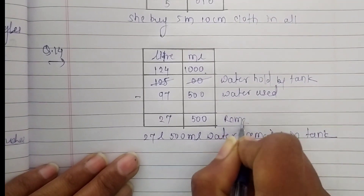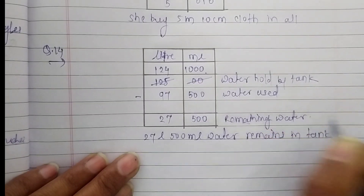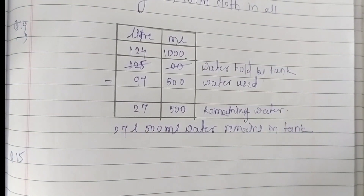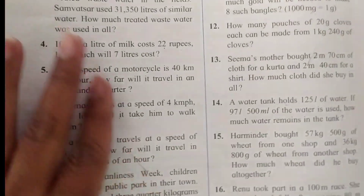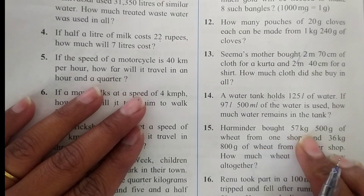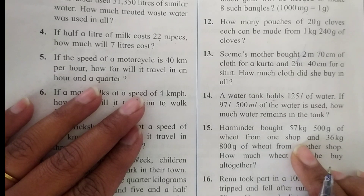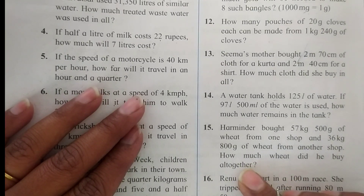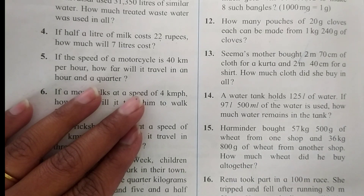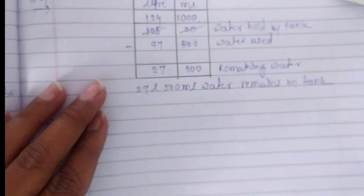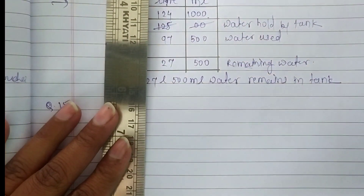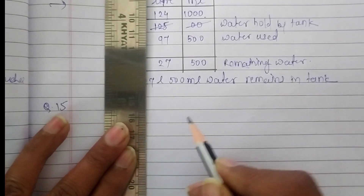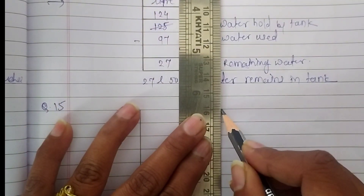This is the remaining water. Now question number 15: Herminder bought 57 kg 500 grams of wheat from one shop and 36 kg 800 grams from another shop. How much wheat did he buy altogether? Here we have to find the total wheat by adding these two weights. We make columns — this is a problem of addition, so we make an extra column on the lower side.